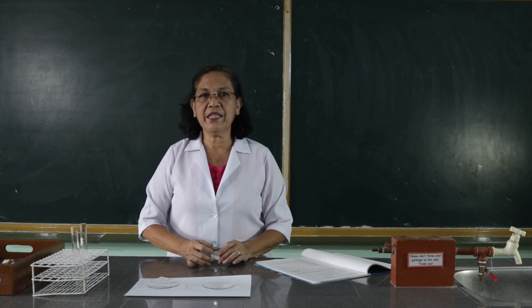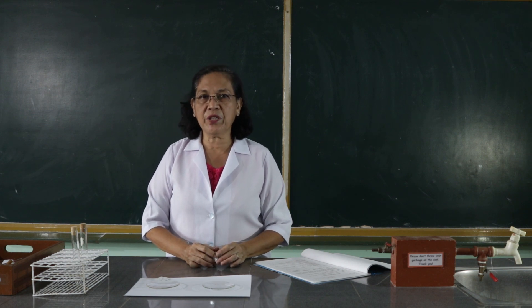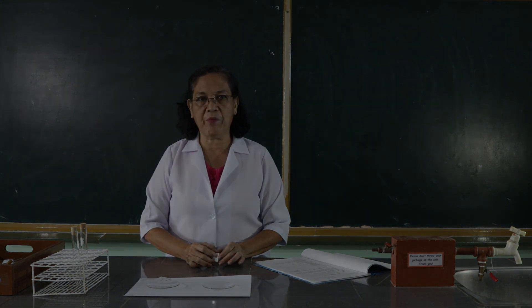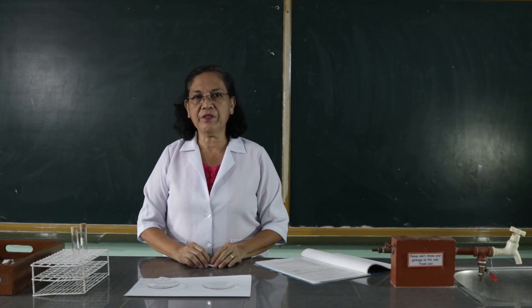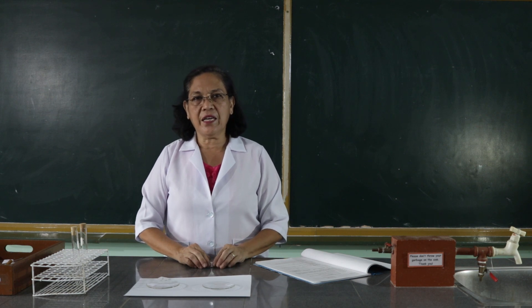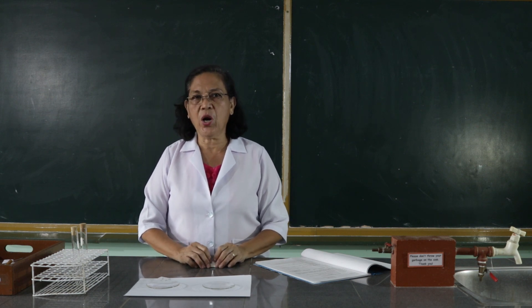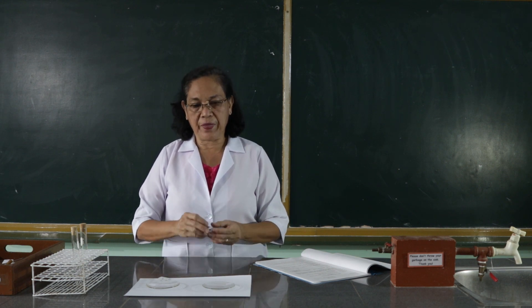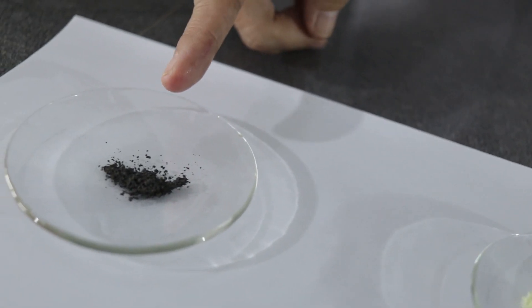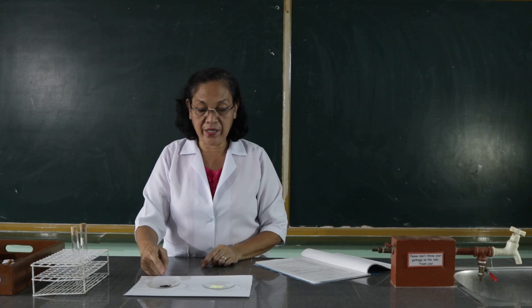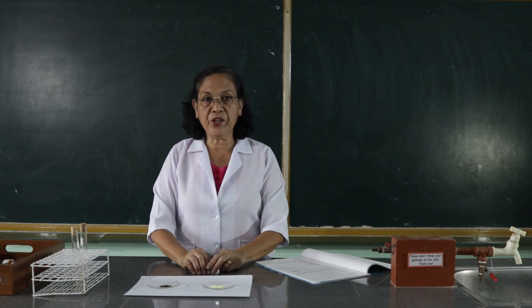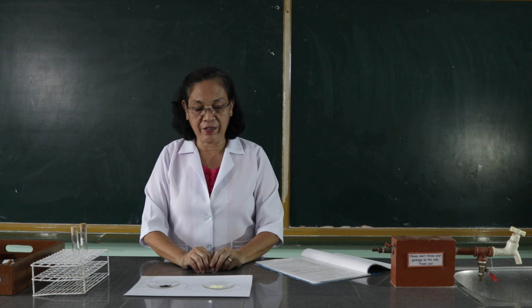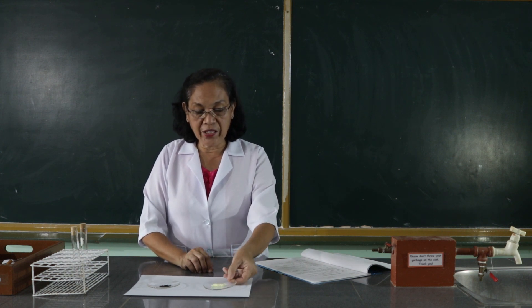Kindly listen attentively and observe as I'm going to do a demo. The first part of the activity is we're going to observe the physical state, the color, and the solubility of sulfur and antimony. This is sulfur and this is antimony. We're going to observe their physical state, the color, and the solubility in carbon disulfide.